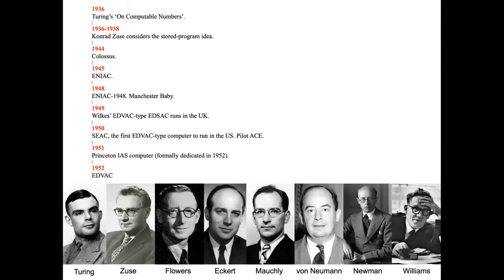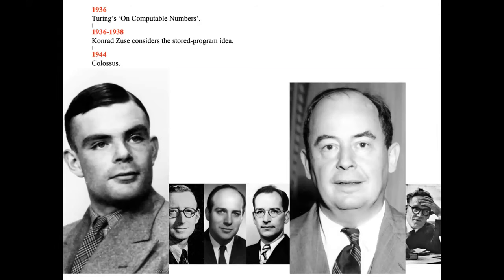Here's a timeline to tie things together. In 1936, Turing's uncomputable numbers. During 1936 to 1938, Zuse in Germany independently considers the stored program idea. The ultra-secret Colossus in 1944, ENIAC in 1945, ENIAC 1948 and the Manchester Baby. In 1949, Maurice Wilkes's EDSAC runs in Cambridge, England. In 1950, SEAC — the first EDVAC-type computer to run in the US — designed in DC by Ralph Slutz and Sam Alexander; in the UK, Pilot ACE; the Princeton Computer; and finally EDVAC. One fascinating and hotly debated question is whether Turing's ideas influenced von Neumann's thinking about computer design as well as vice versa. Zhao is going to mention this aspect.